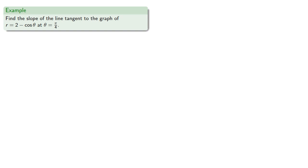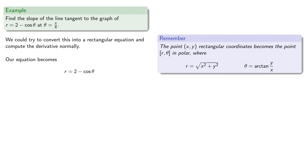We could try to convert this into a rectangular equation and compute the derivative normally. We have our conversion formulas and so our equation becomes, which we differentiate to get a real mess. I really don't want to have to differentiate this so maybe we don't want to do it this way.